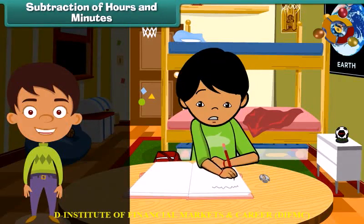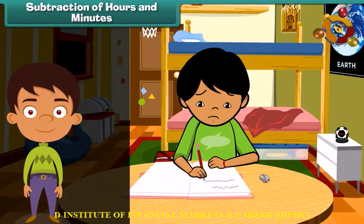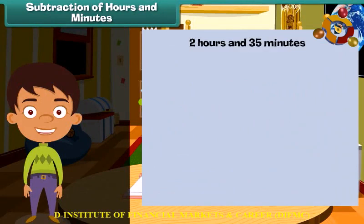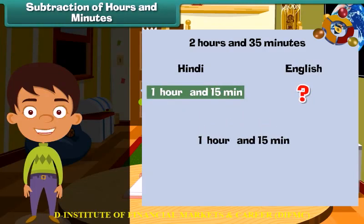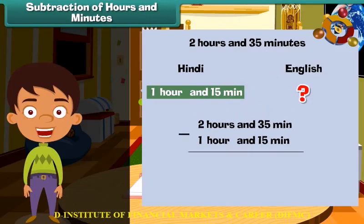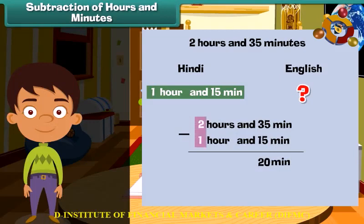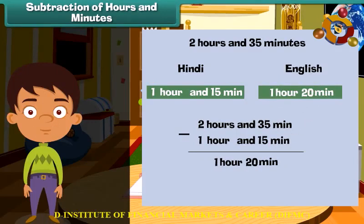Subtraction of hours and minutes. Ladika completed her English and Hindi homework in 2 hours and 35 minutes. Hindi homework was over in 1 hour 15 minutes. How much time did Ladika take to complete her English homework? Subtract the time for Hindi from the total: first, subtract the minutes — 35 minus 15 is 20 minutes. Then subtract the hours — 2 minus 1 is 1 hour. So Ladika took 1 hour and 20 minutes to complete her English homework.